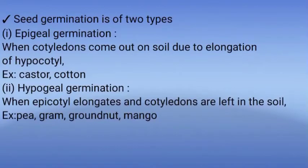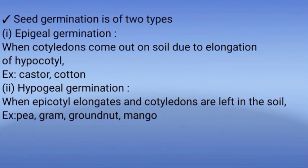Seed germination is of two types: number one, epigeal germination; number two, hypogeal germination. In epigeal germination, cotyledons come out above the soil due to elongation of the hypocotyl — examples: castor and cotton. In hypogeal germination, the epicotyl elongates and cotyledons remain in the soil — examples: pea, gram, groundnut, and mango.